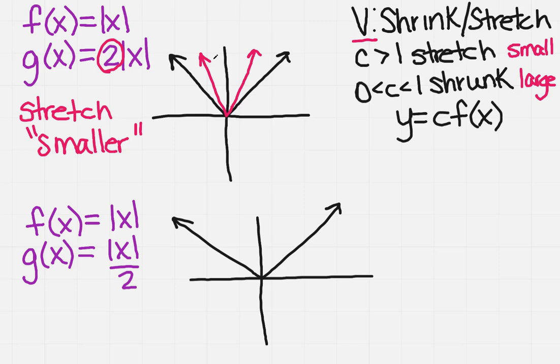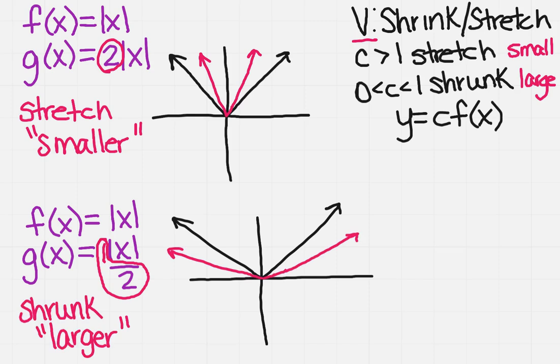Now what I want you to do is I want you to pause the video, and I want you to try going from the absolute value of x to the absolute value of x divided by 2. Again, here is your understood 1, so then your coefficient is going to be a fraction. So try that one and come back. So this one is a fraction, so you should have shrunk it, which made it appear larger, because it's outside of your original function.